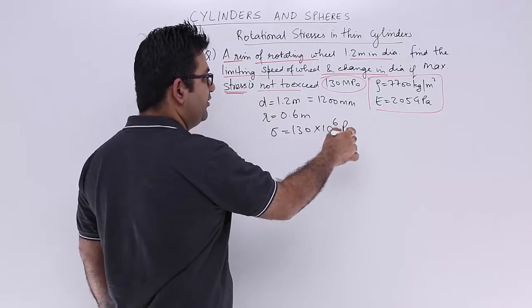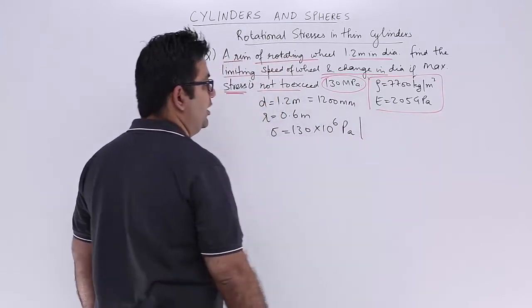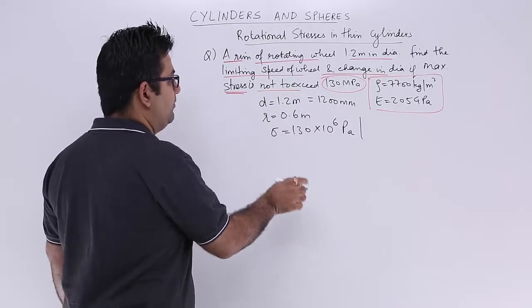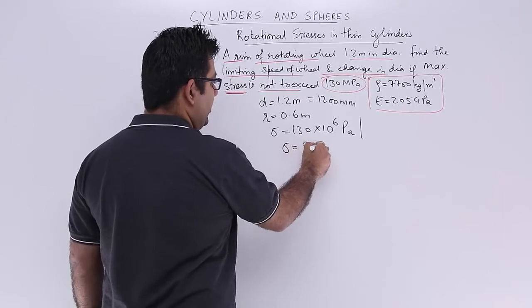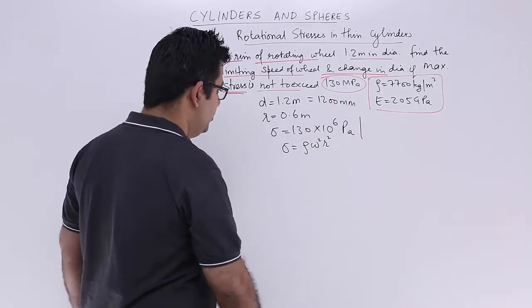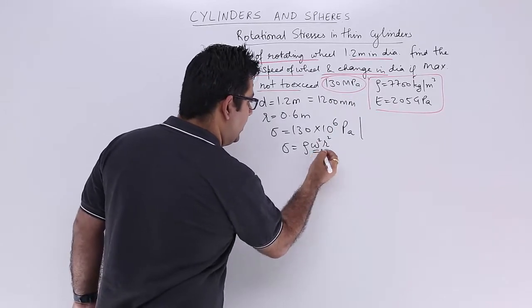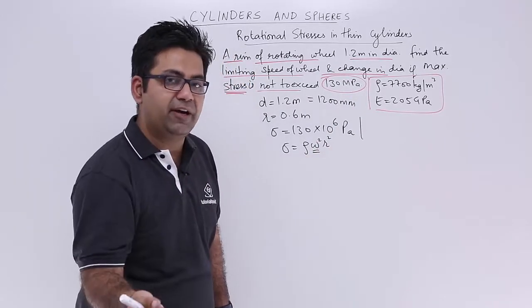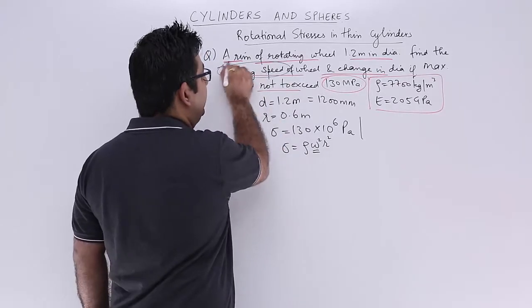The density is given to you and your Young's modulus is given. Now we know that the maximum value of stress is ρω²R². From this equation I can find omega, and from omega I can find the RPM, which would be the limiting speed.